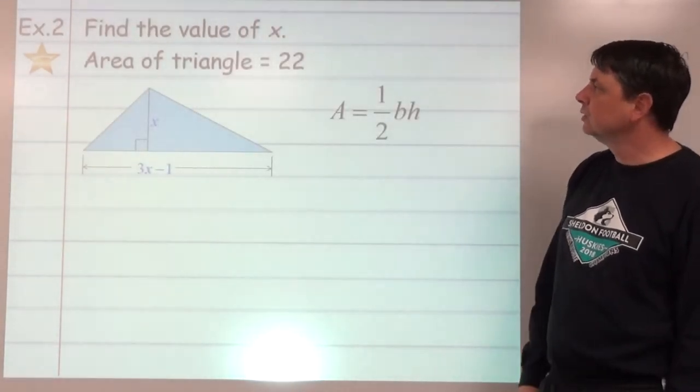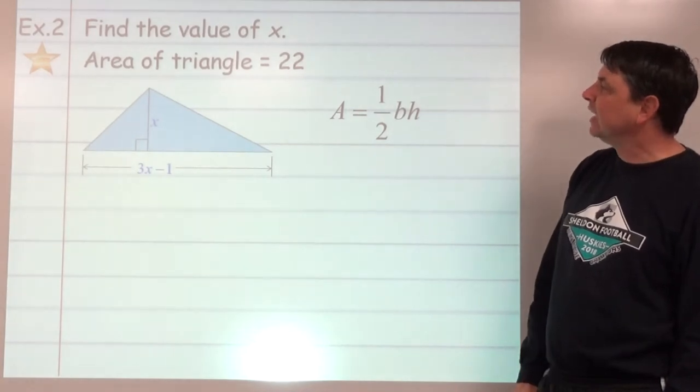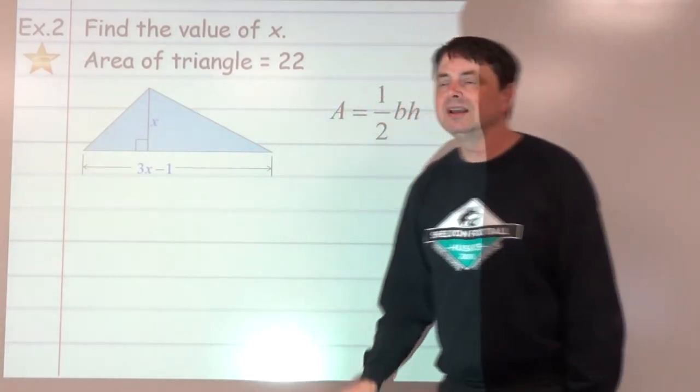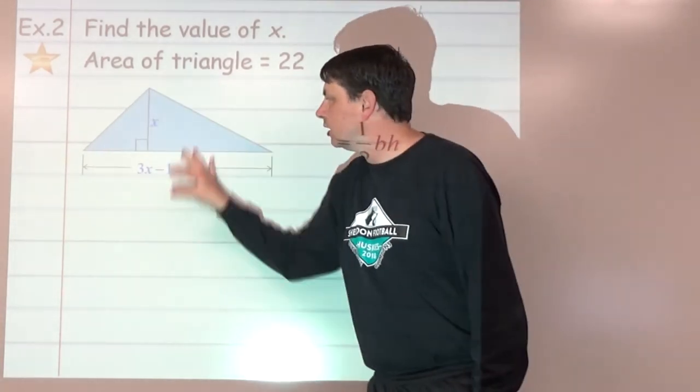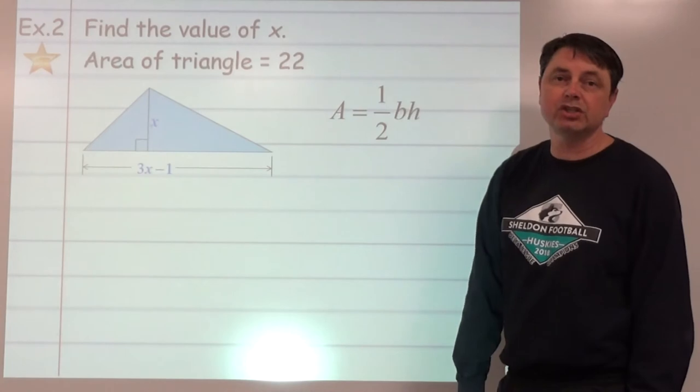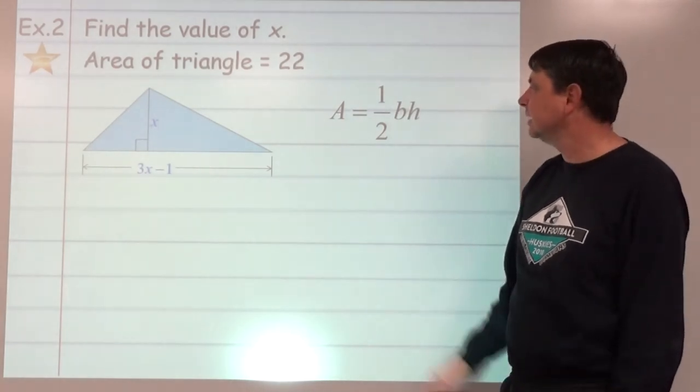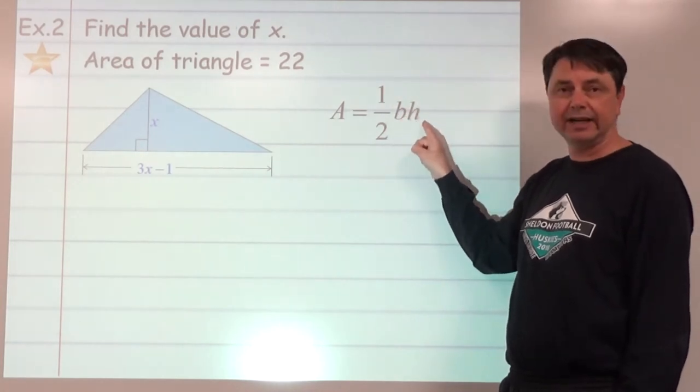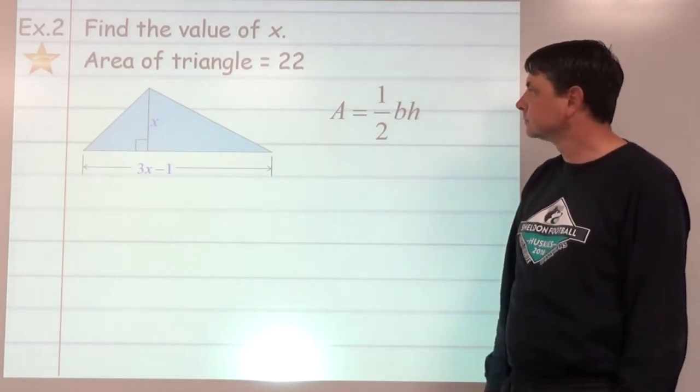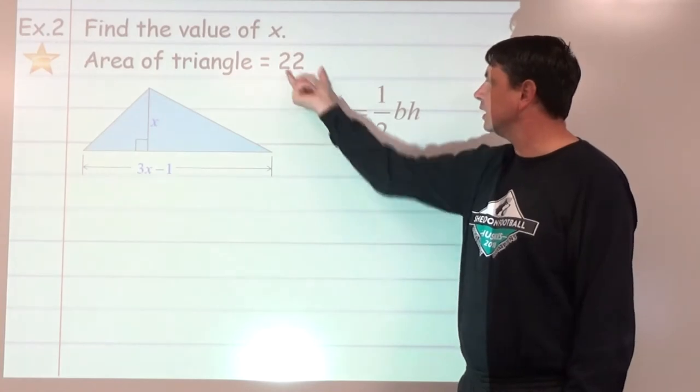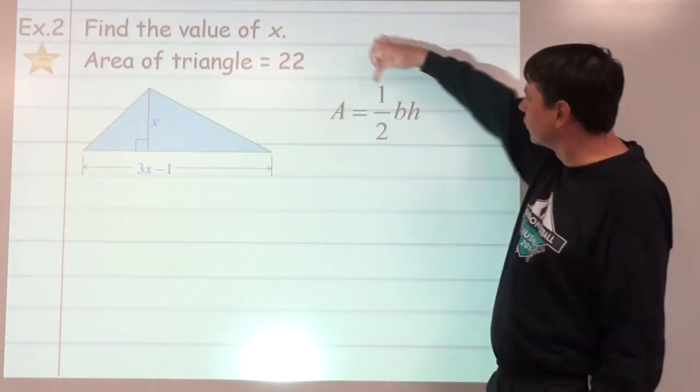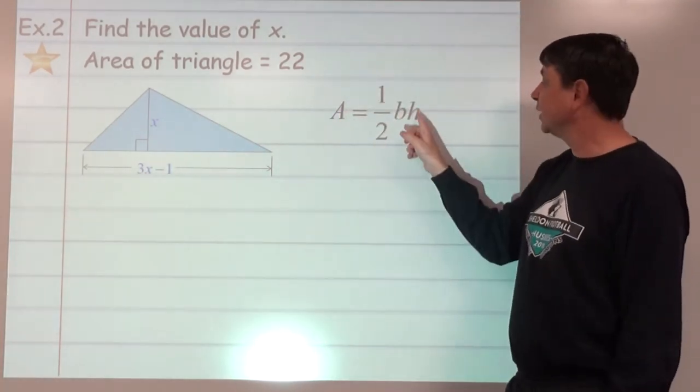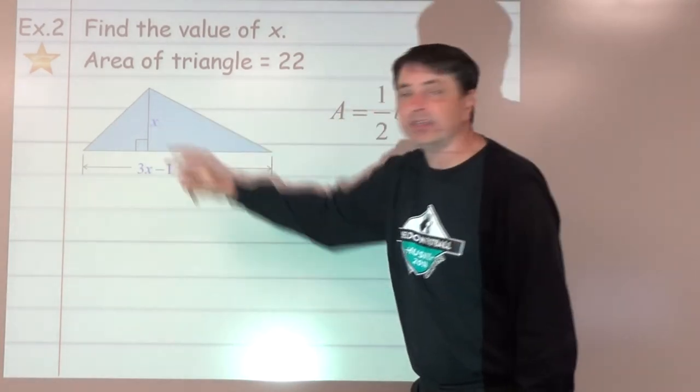Example number 2: Find the value of x where we know that the area of the triangle is 22. We've got some sort of relationship with the dimensions base and height. Area for a triangle is one-half times the base times the height. So we know the area is 22. Let's start there and substitute. We can replace b with 3x minus 1, and we can replace h with x.